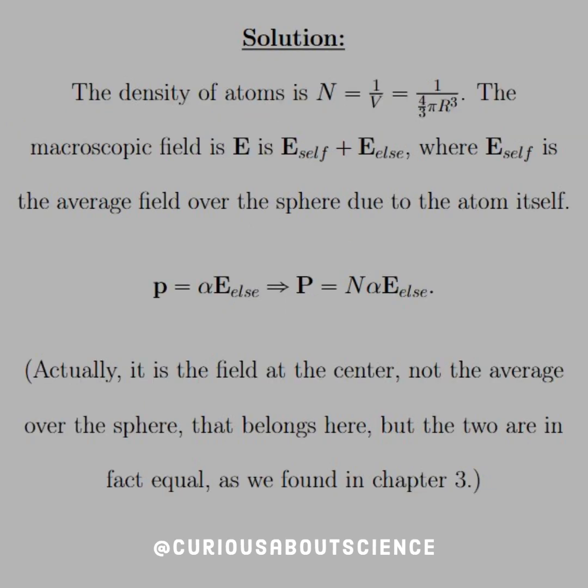Pretty lengthy discussion like I mentioned, but to start, let's first consider the density of atoms in the dielectric material. This would be written as N, which again is density divided by volume. So there's only one atom here, so 1 over the volume of a sphere is 4/3πR³, nothing new.